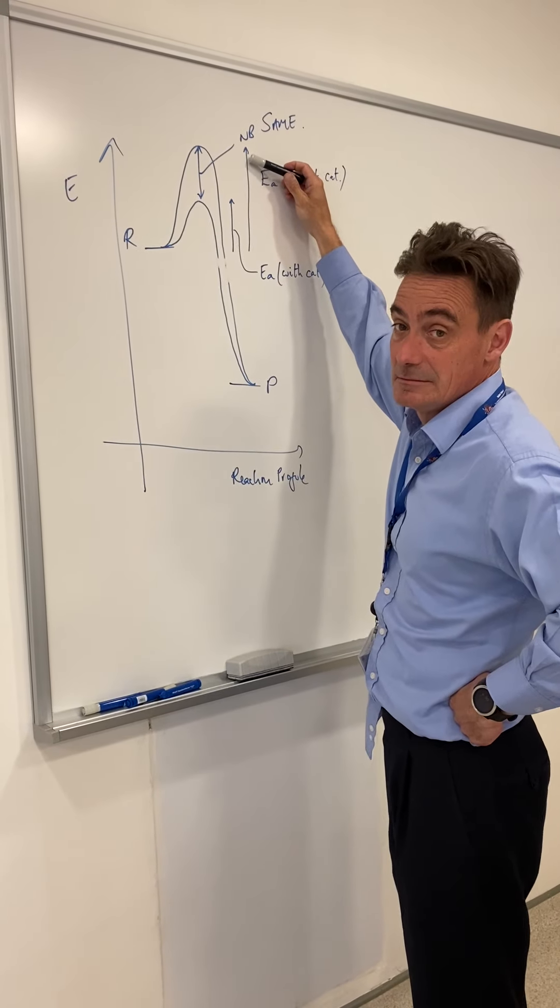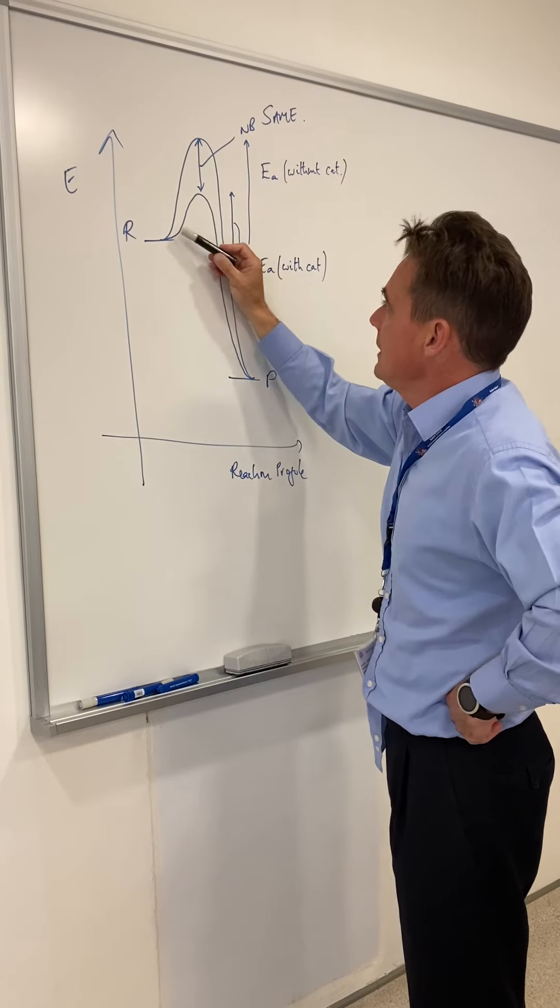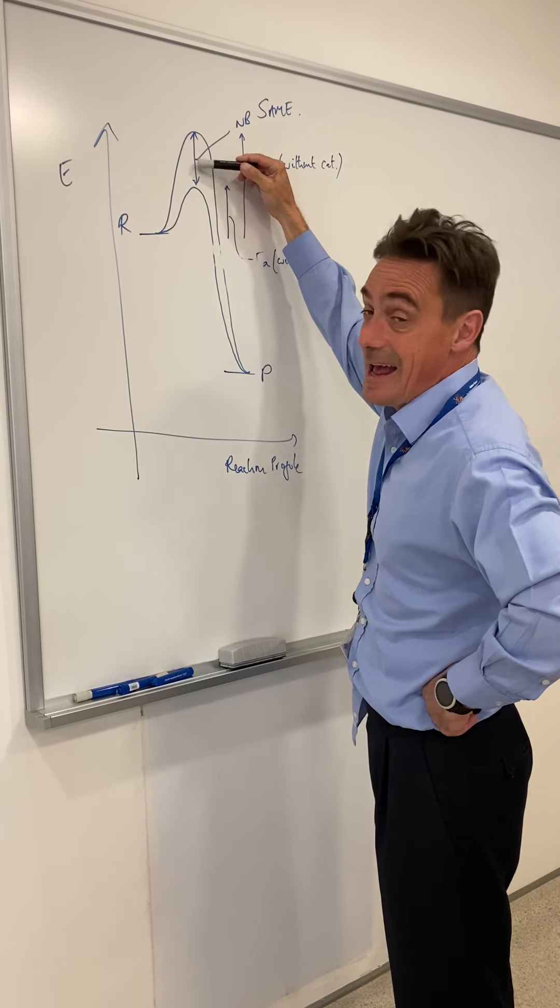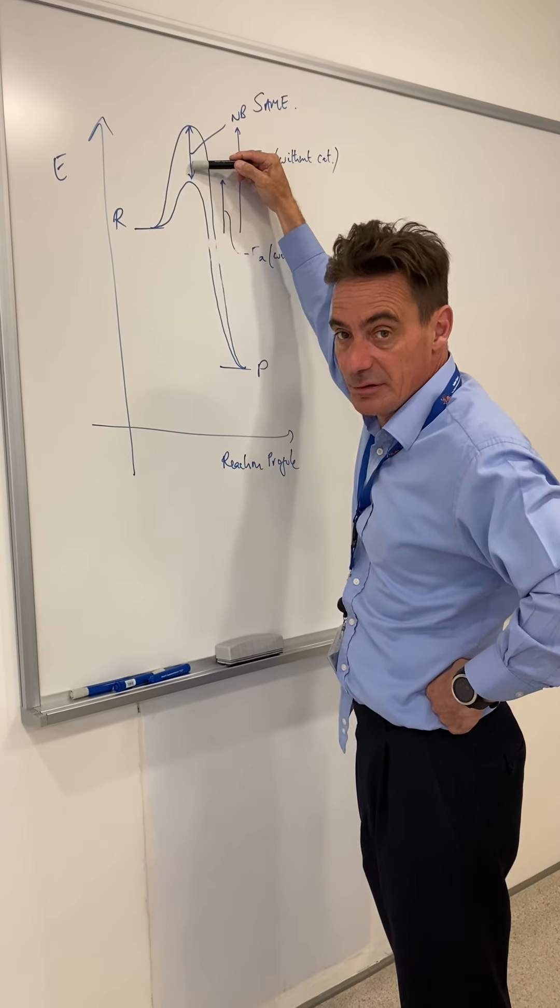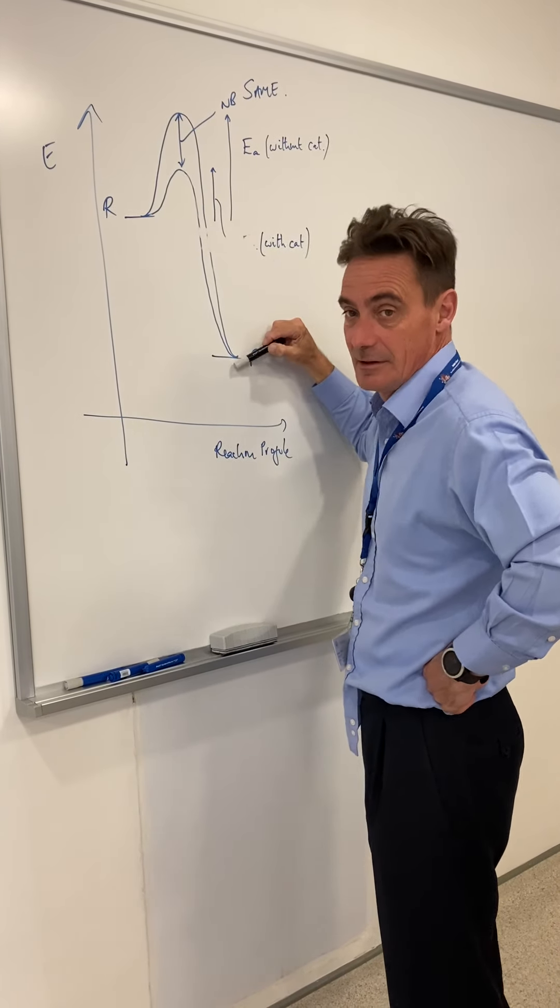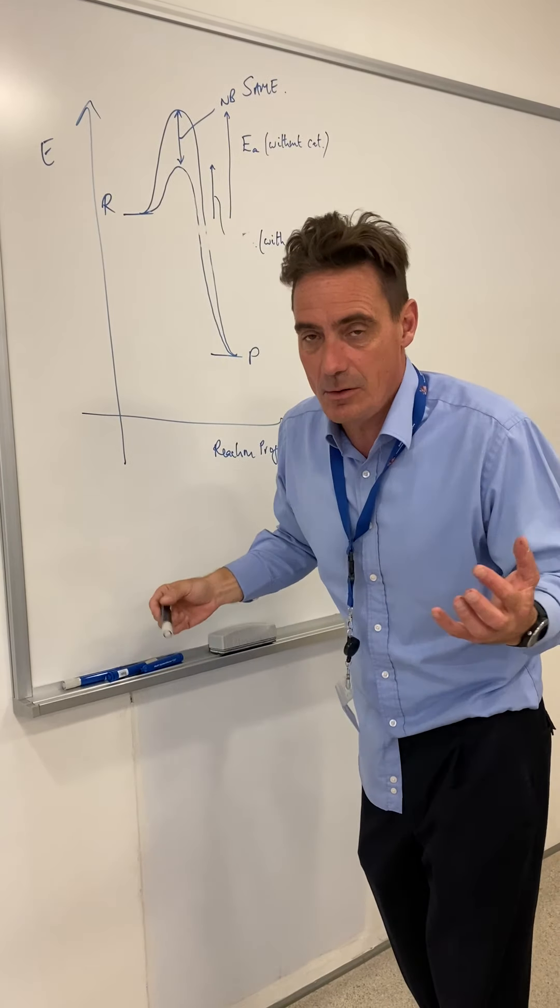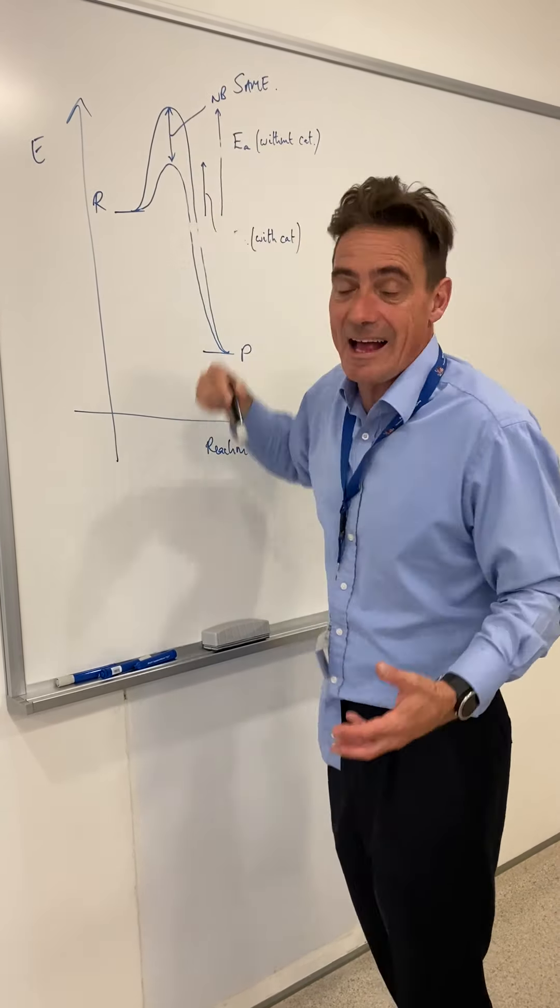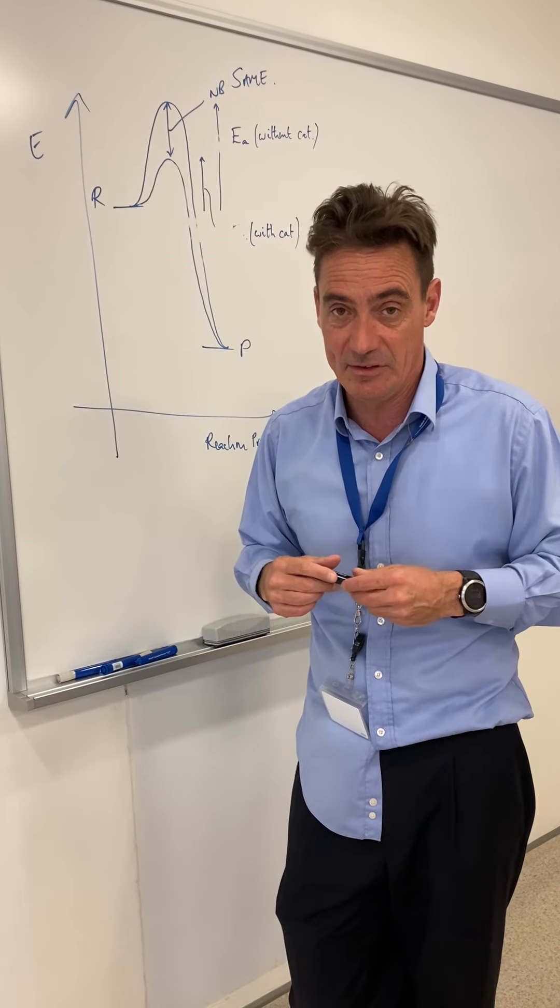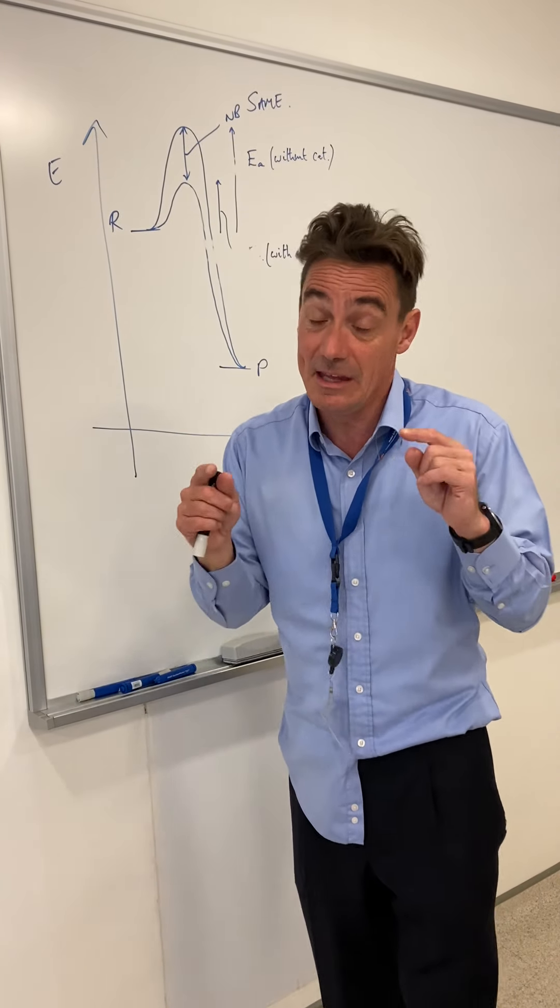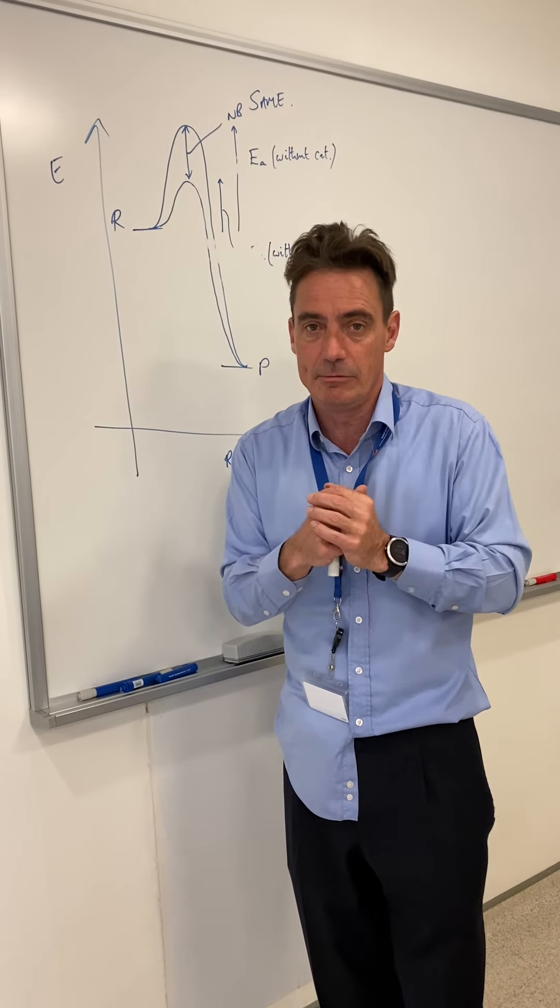Notice the arrow points up only for activation energy because it's always endothermic. And here's the EA if you have a catalyst. Now if we use a catalyst, notice that we have the same drop in energy for the backward reaction as well as the forward reaction. So therefore it equally favors both because the activation energy has dropped the same for both the forward and the backward reaction. So therefore catalysts do not alter the position of equilibrium. What they do do is they get the reaction to go faster so that the dynamic equilibrium position will be reached much more quickly.